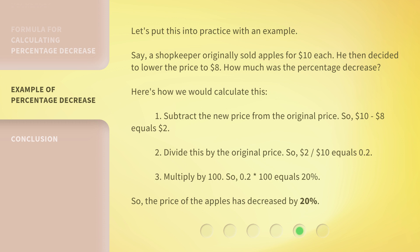Here's how we would calculate this. 1. Subtract the new price from the original price. So, $10 minus $8 equals $2. 2. Divide this by the original price. So, $2 divided by $10 equals 0.2.